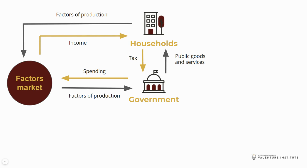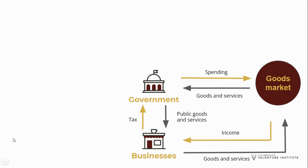Let's look at the flow between households and government. Households provide factors of production to the factors market. The government needs these factors of production too, so they will spend money to purchase them. The money that they spend becomes an income for households. Households pay tax to the government and receive public goods and services in return. Businesses provide goods and services on the goods market, and the government spends money to purchase these — that money becomes income for businesses. Businesses pay tax to the government, and the government provides businesses with public goods and services.